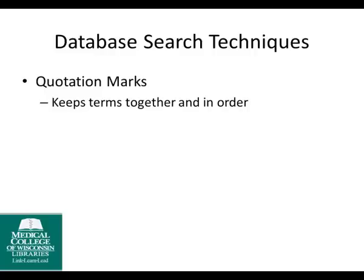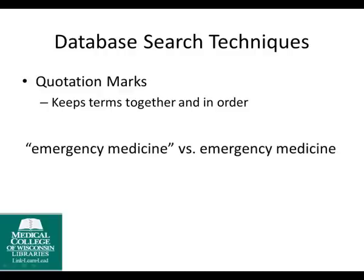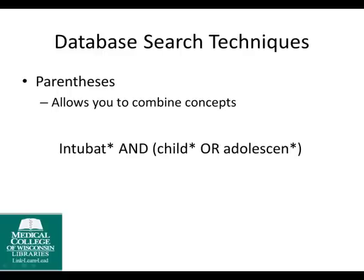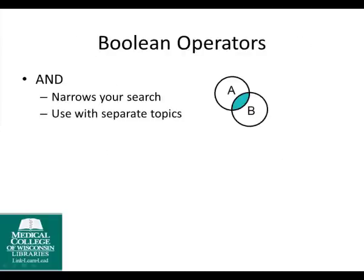Quotation marks are helpful for searching exact titles or terms like emergency medicine. Try searching PubMed with and without the quotes around emergency medicine, and you'll find different results. Another search technique is the use of parentheses. Parentheses are used in the same manner that they would be used in math equations, and they allow for ordering sets of terms. In this example, putting parentheses around child or adolescence asks the database to search these terms together first, and then add that to intubate.